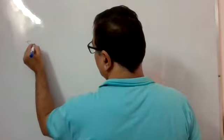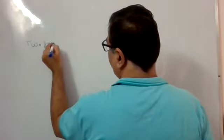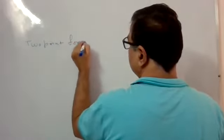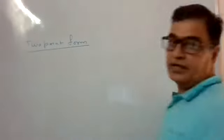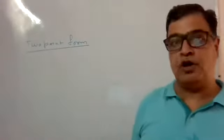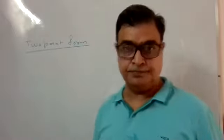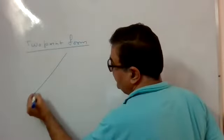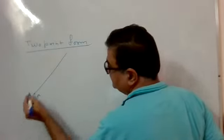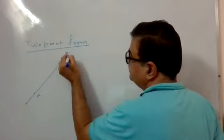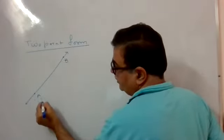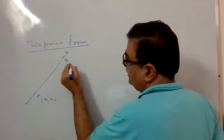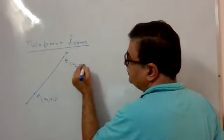The next topic is the two-point form of a straight line. To get the two-point form, it is very simple: if there are two points given on the line, A and B, let the coordinates of A be (x1, y1) and the coordinates of B be (x2, y2).